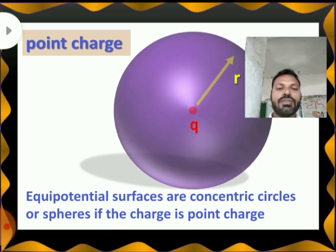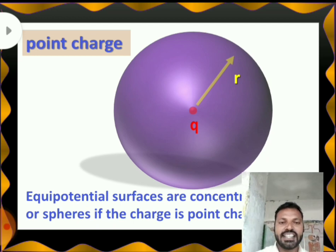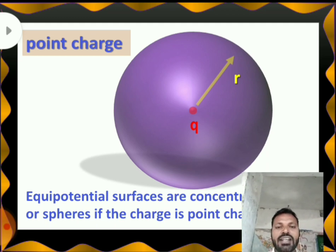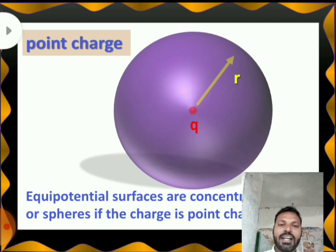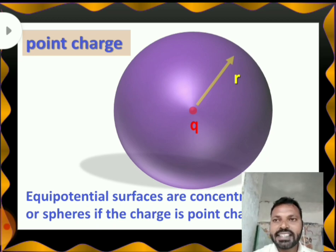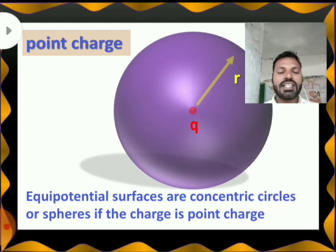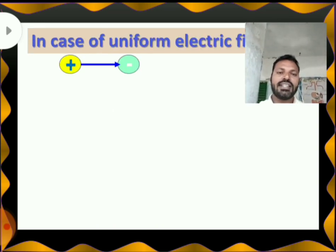In three-dimensional view, this is a sphere. My charge Q is at the center, and the radius is R. Take any point on the surface — every point is at distance R. My potential at all points is V is equal to 1 by 4 pi epsilon-naught Q by R only. That means this sphere is an equipotential surface. So in three dimensions, if there is a point charge, the equipotential surface is a sphere. In two dimensions, it is a circle — all concentric circles.